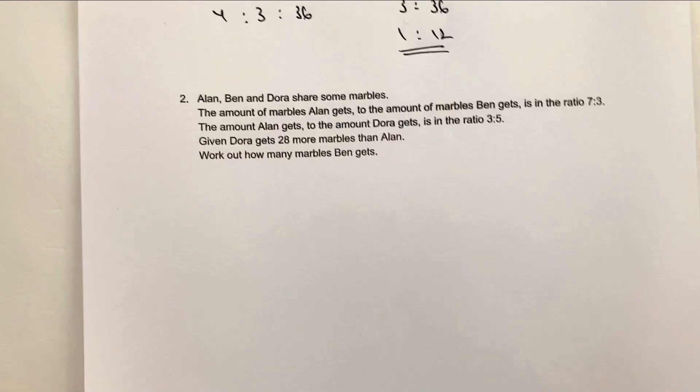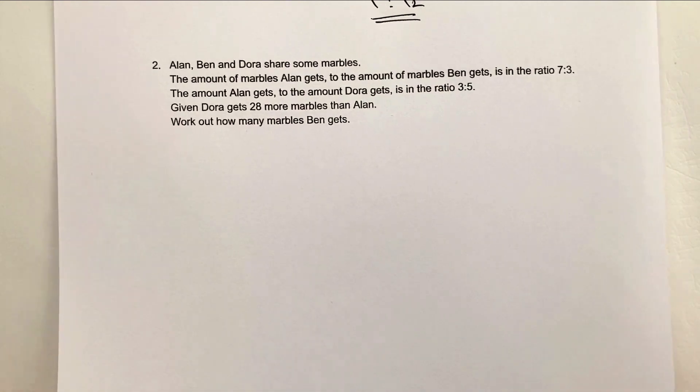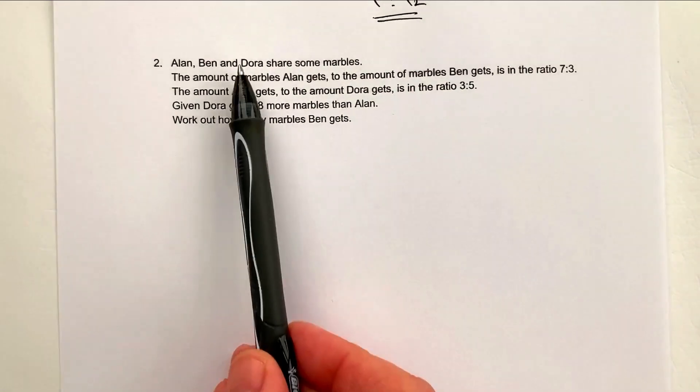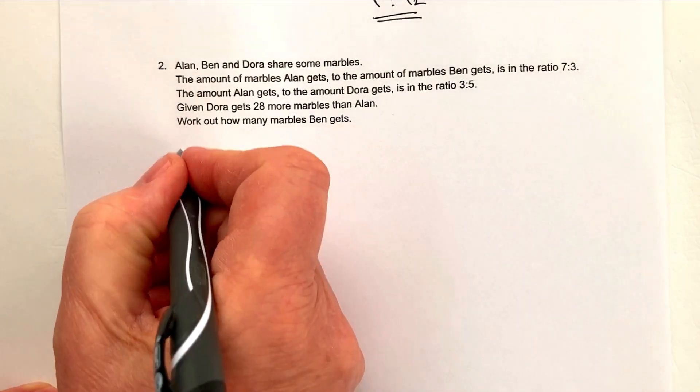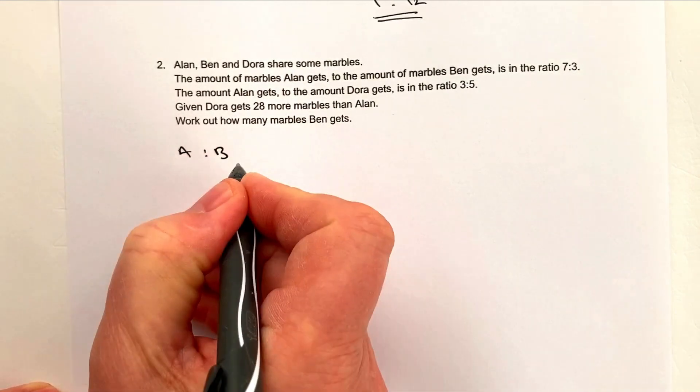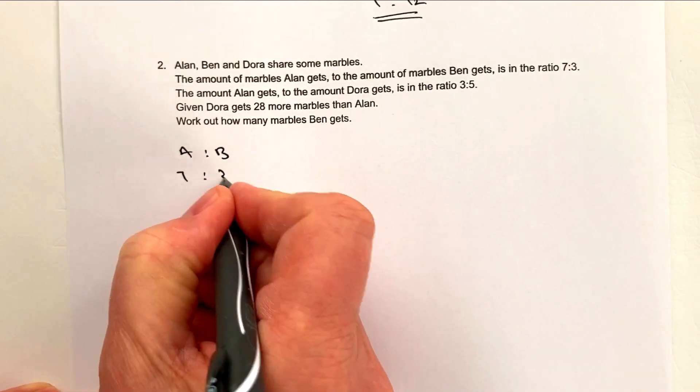Let's move on then to question number two, which is one of the channel members, which is Dora. Thank you again to Dora for being so supportive of the work at 3 Minute Maths. So Alan, Ben and Dora share some marbles. The amount of marbles Alan gets to the amount of marbles Ben gets is in the ratio 7 to 3. And again, a lot of words in this particular question, but let's break it down. So we've got Alan to Ben, and that's going to be in the ratio 7 to 3.